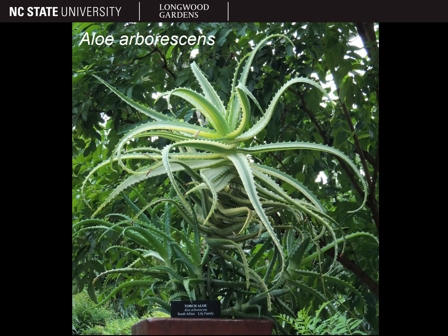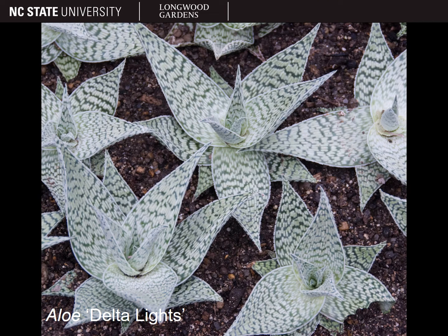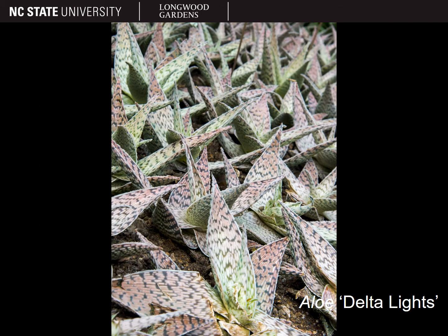Some species of aloe have fantastic wavy or curly leaves like the torch aloe, aloe arborescens. And there are a number of different cultivars and hybrids available, such as this beautiful hybrid, aloe delta lights, that features dense maculation over dark green leaves. In bright sunlight or grow lights, aloe delta lights may take on a really attractive pinkish hue that adds to the ornamental quality.